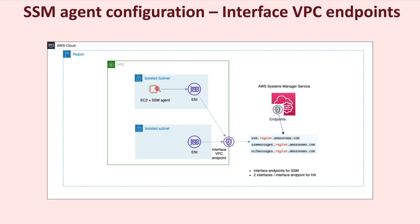For high availability, it is preferred that you select a minimum of two subnets when creating an interface endpoint. The traffic flows from the EC2 instance to either of the ENIs for the interface endpoint. It prefers to send traffic to the ENI created in the same subnet, but because of local routing, traffic could go to either ENI. Through AWS PrivateLink, this traffic is privately sent to the SSM service listening on that endpoint. The SSM agent always initiates the outbound connection to the endpoints.